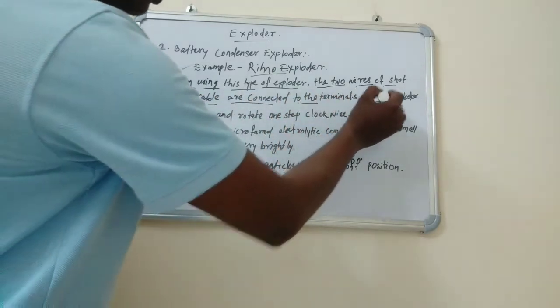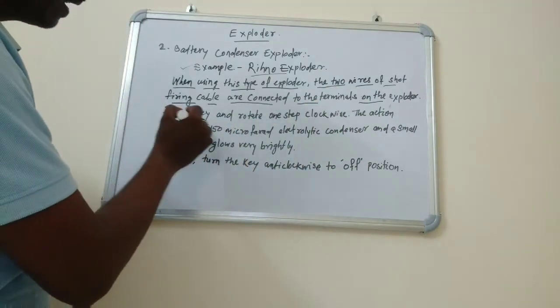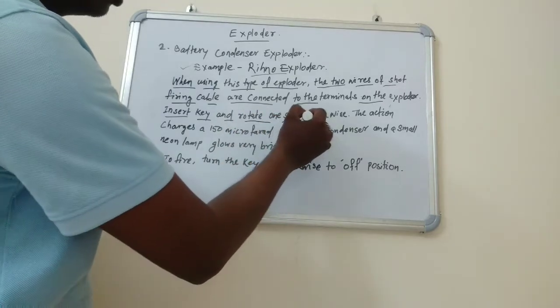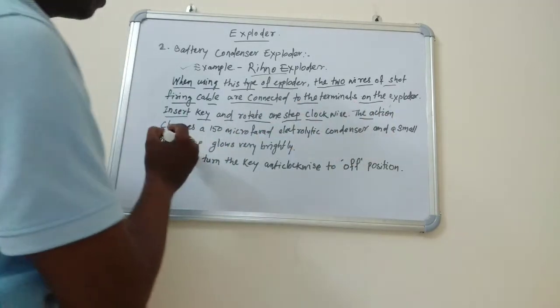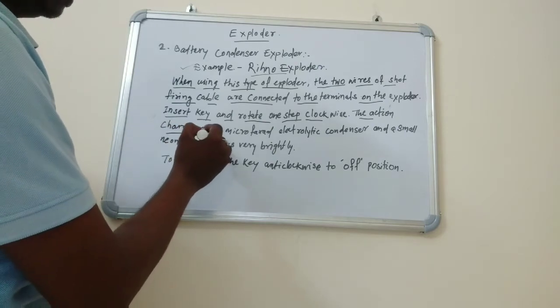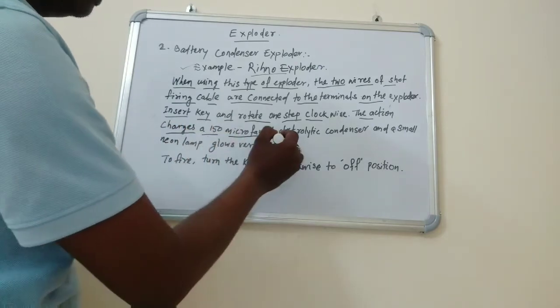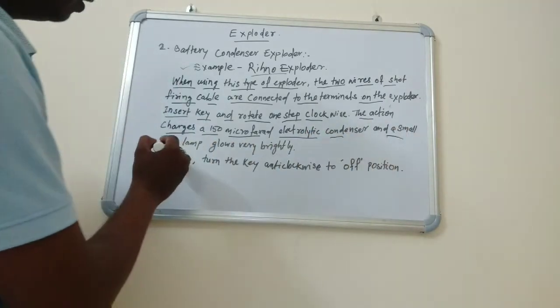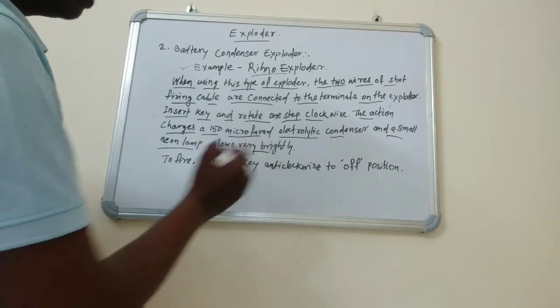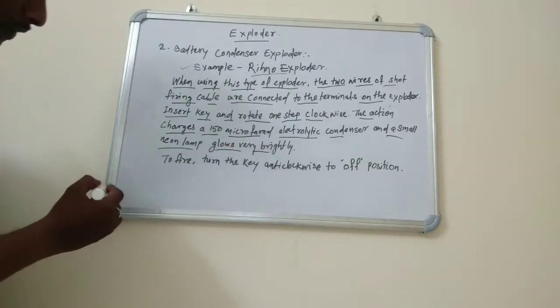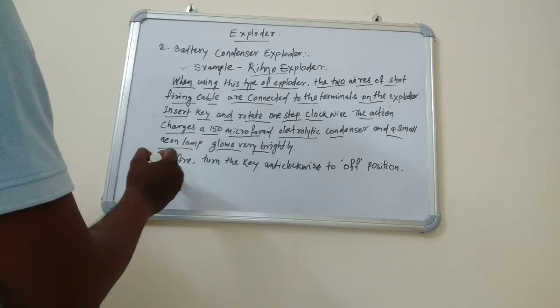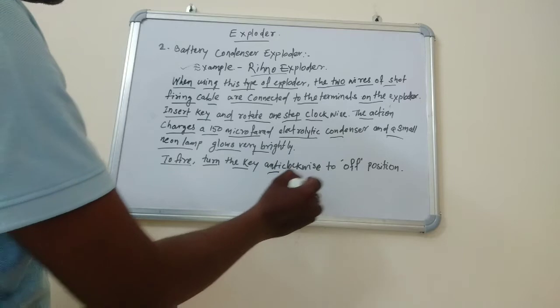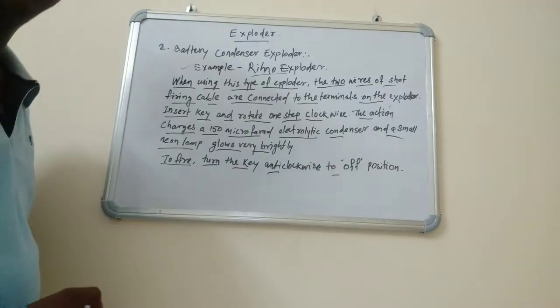To fire, turn the key anti-clockwise to the off position. Rhino 3 model can fire three shots at a time and Rhino 25 model can fire about 25 shots at a time.